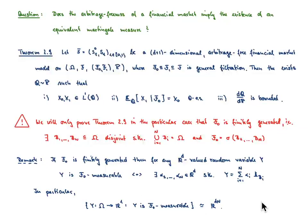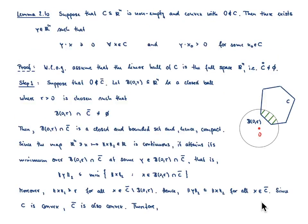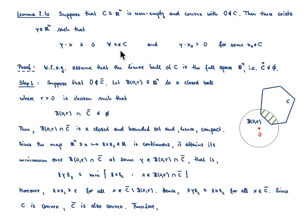So let us look at the separation theorem, phrased here as a lemma. Suppose you have a subset C of R^n which is non-empty, convex, and has the property that 0 is not contained in C. Then there exists a vector y in R^n such that the scalar product between y and x is strictly positive for all x in C.